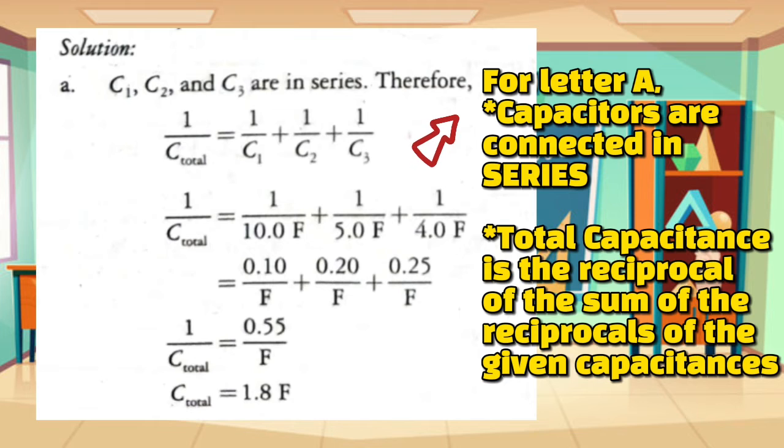We now start solving for letter A. In diagram A, capacitors are connected in series. And to get the total capacitance in series, we now get the reciprocal of the sum of the reciprocals of the given capacitances. Thus, our formula will be 1 over C total is now equal to the sum of the reciprocals of the individual given capacitances. Substituting the given values for C1, 2, and 3, we now have 1 over 10 farads plus 1 over 5 farads plus 1 over 4 farads. What we do now with this is we divide 1 by 10, 1 by 5, and 1 by 4.0.